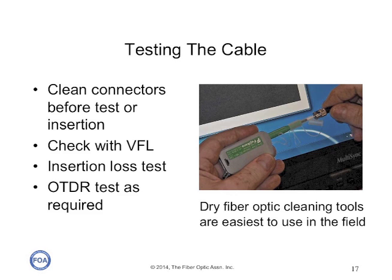After installation, you repeat the insertion loss test done on the cable while still on the spool. You can also use a visual fault locator, which allows you to determine the polarity of the cables and trace cables to make sure you have the right ones. Some users call for OTDR testing, but it requires special high-resolution OTDRs and even then some interpretation of the data. Before every test or connection, clean the connectors — dry cleaning tools like this one are the easiest to use.